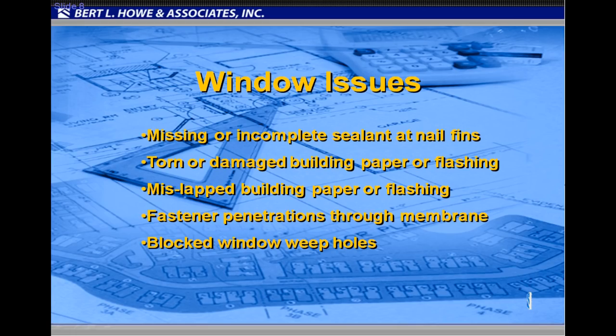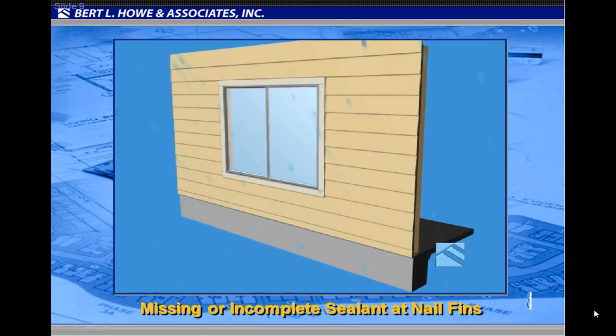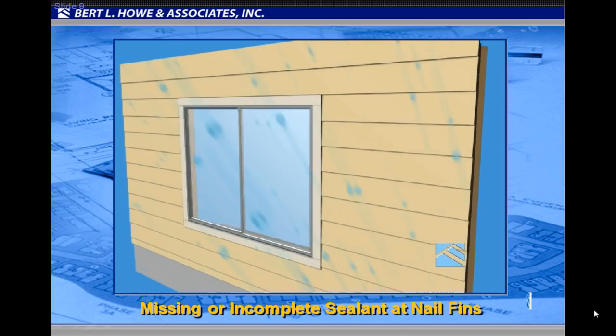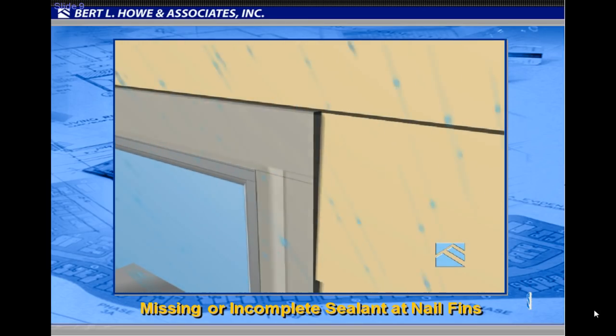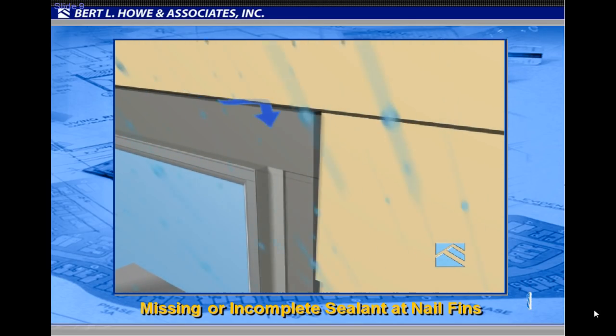Issues typically alleged involving windows and window installation include missing or incomplete sealant and nail fins, torn or damaged building paper or flashing, mislapped building paper or flashing, fastener penetrations through the building membrane, and blocked window weep holes. When the window installer fails to provide adequate sealant between the window nail flange and the flashing material, a potential avenue for water intrusion is created.